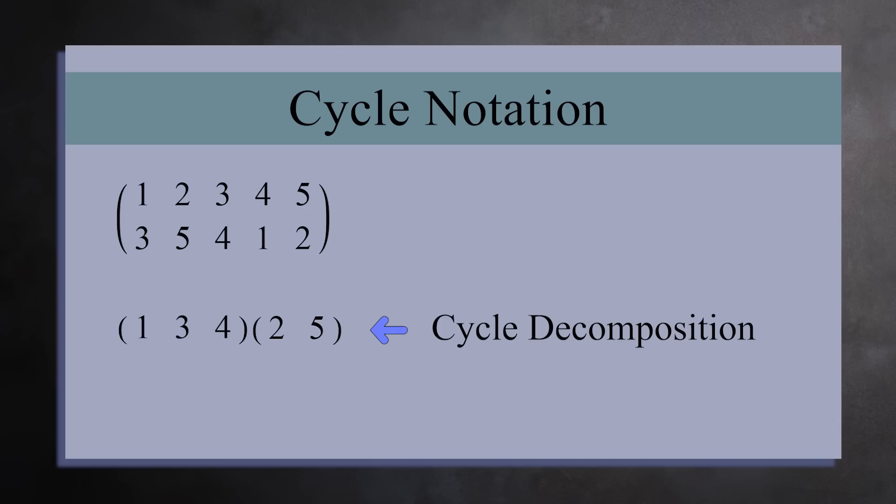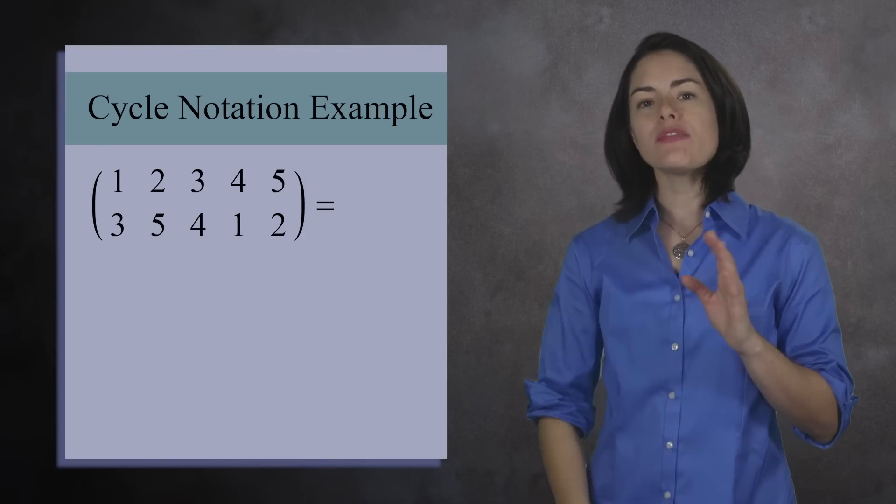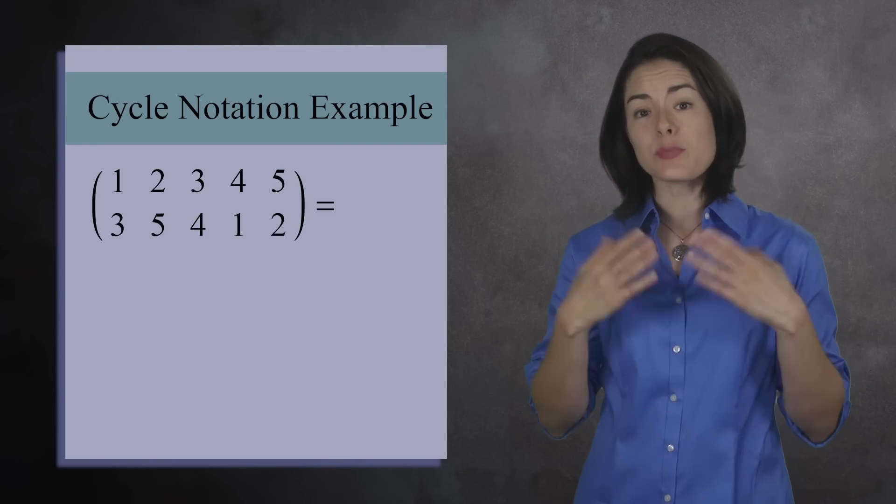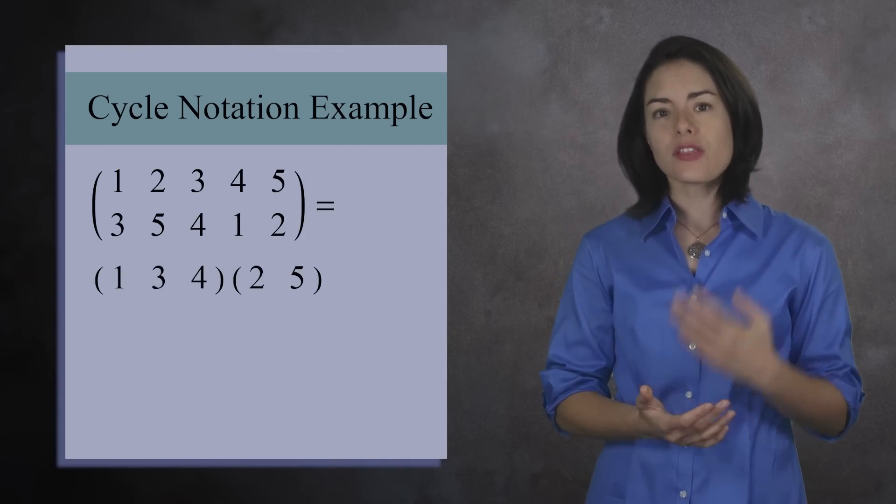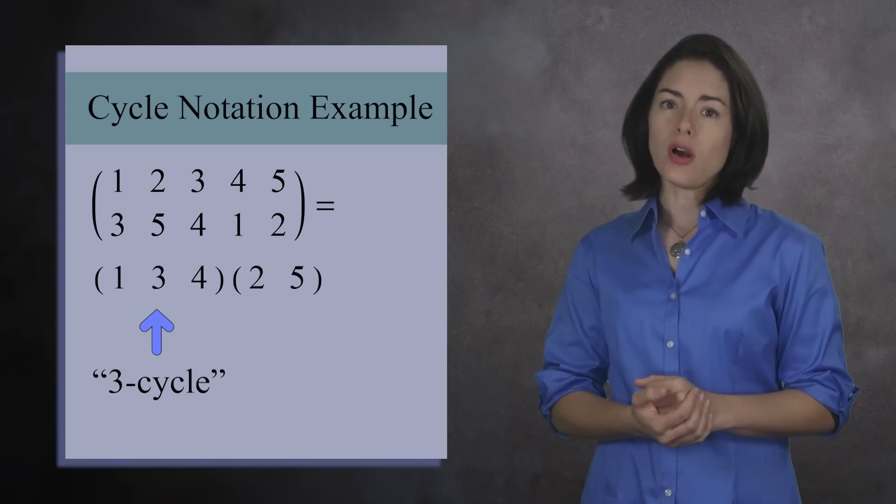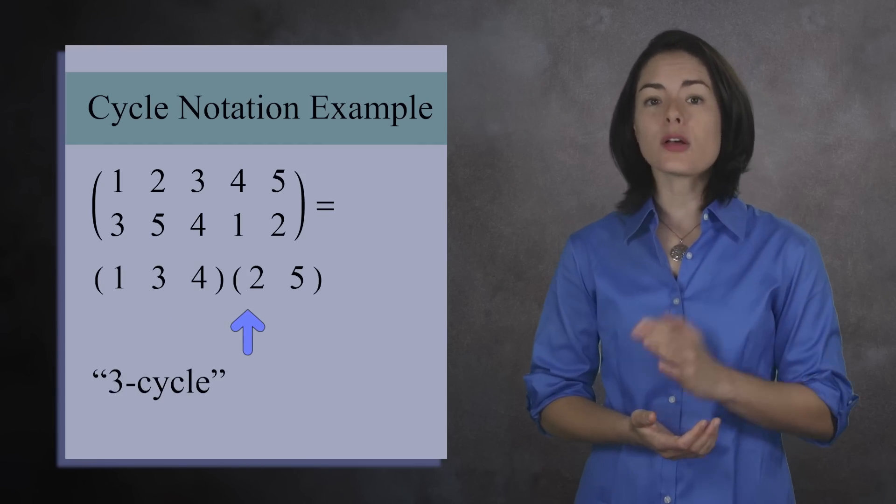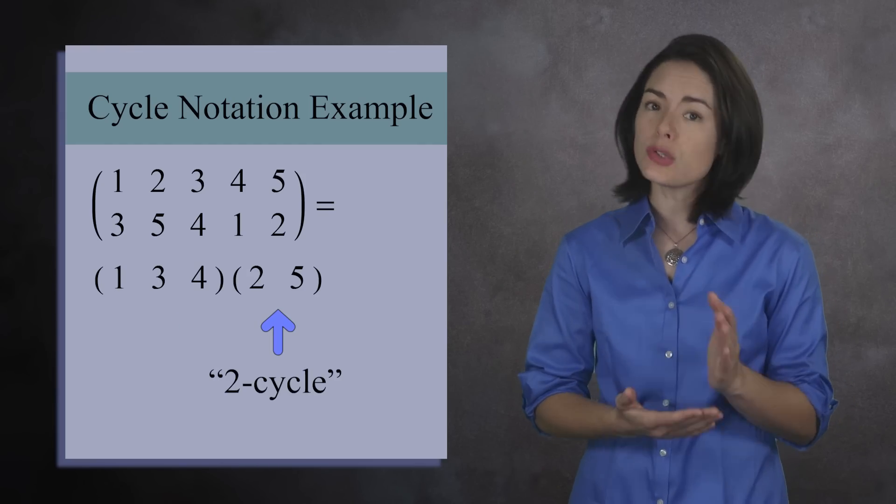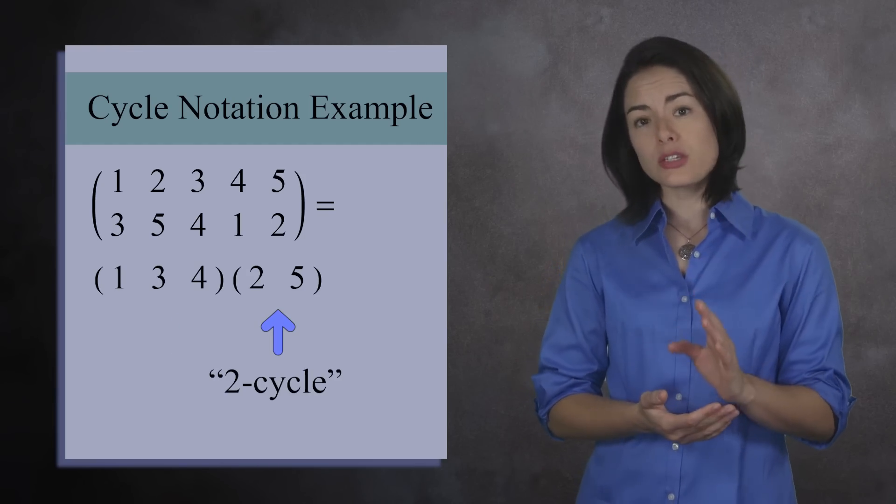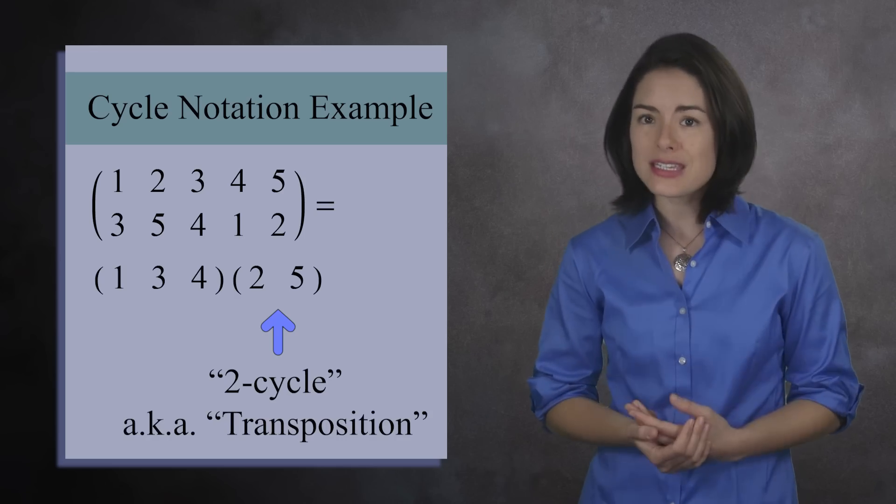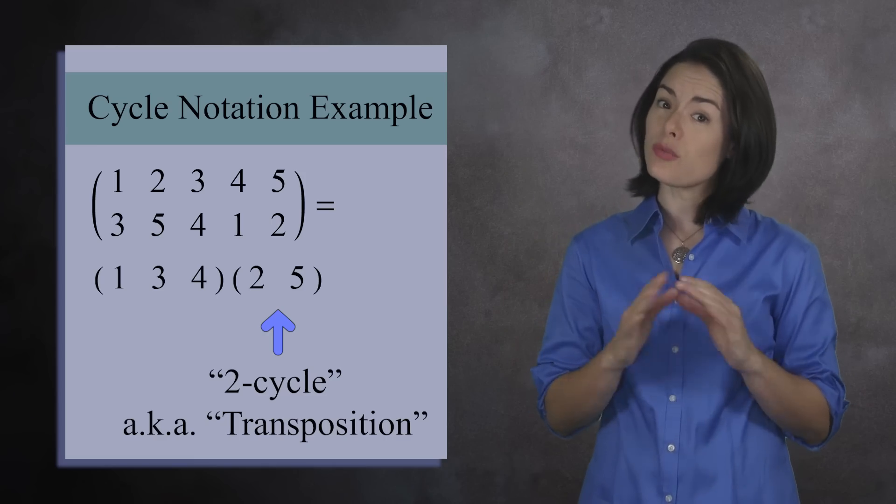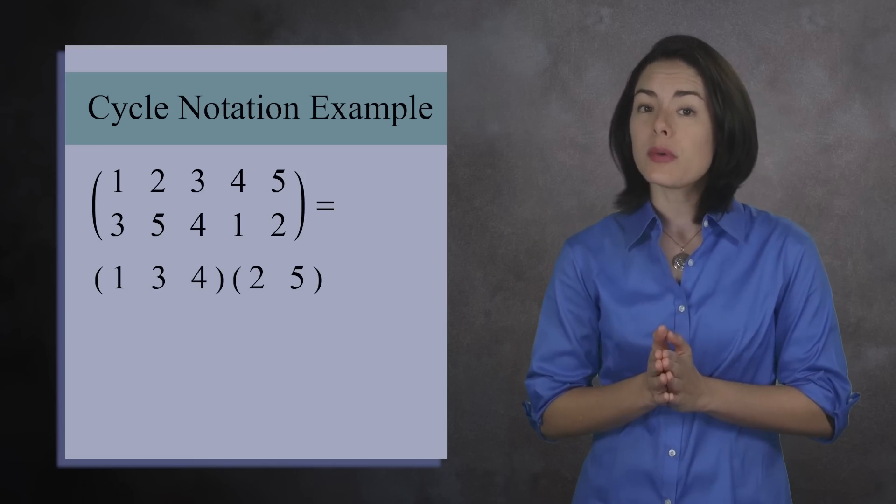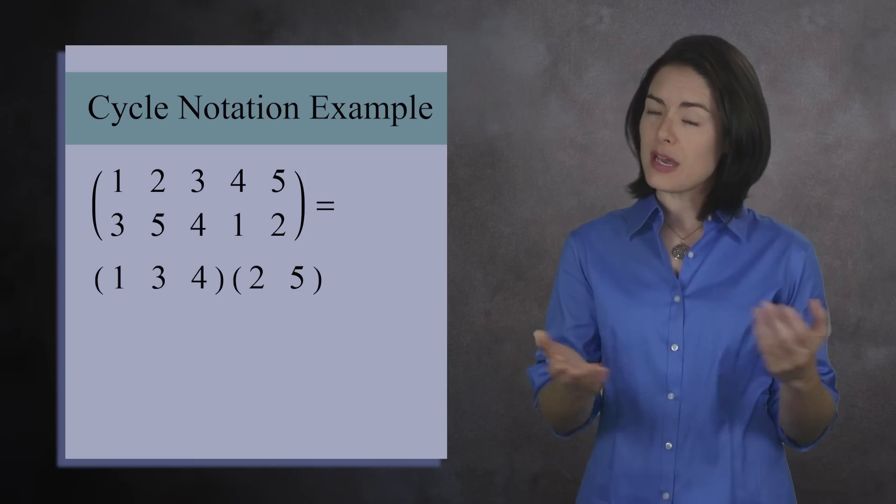Every number appears in exactly one cycle, and each cycle describes part of the permutation. So the permutation 3, 5, 4, 1, 2 can be written as a product of 2 cycles. The first cycle has length 3, so we call it a 3 cycle. The next cycle has length 2, so we call it a 2 cycle. A cycle of length 2 is also called a transposition. As you can see, cycle notation is much easier to write, but there are more things to learn about cycles. So let's see another example.